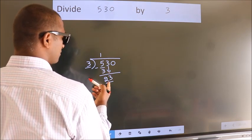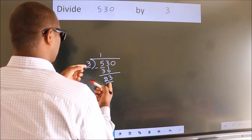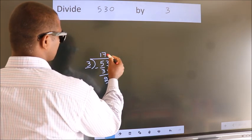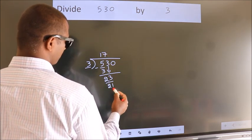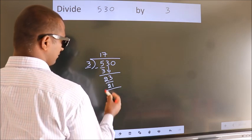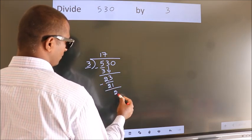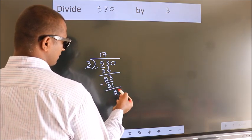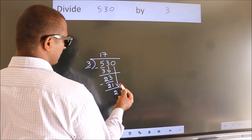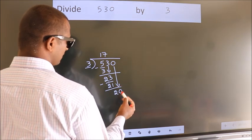A number close to 23 in the 3 table is 3 sevens, which is 21. Now we subtract. We get 2. After this, bring down the beside number. So 0 down, making 20.